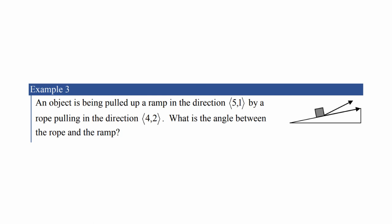An object is being pulled up a ramp in the direction 5-1 by a rope pulling in the direction 4-2.